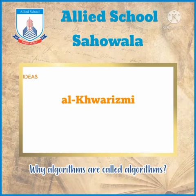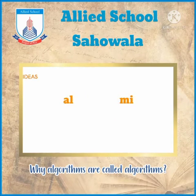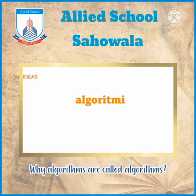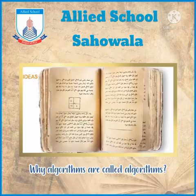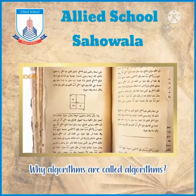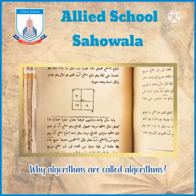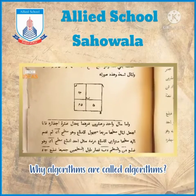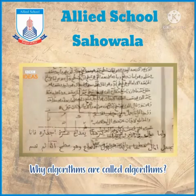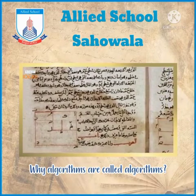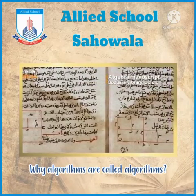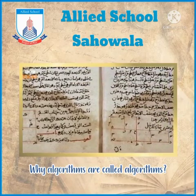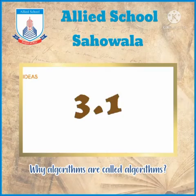Al-Khawarizmi's name, when Latinized in the title of the book, became Algorithmi, and this is the origin of the word Algorithm. We also have al-Khawarizmi to thank for the word Algebra, which comes from another of his works. His books revolutionized mathematics in the West, showing how complex problems could be broken down into simpler parts and solved. In medieval Latinism,